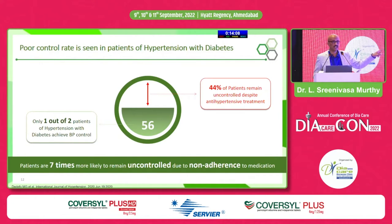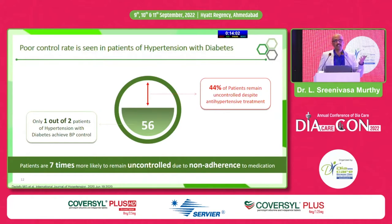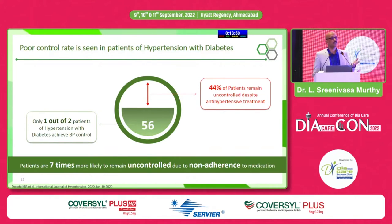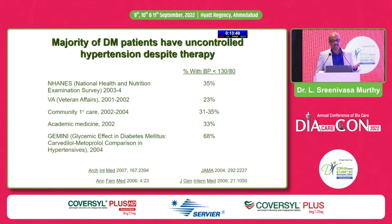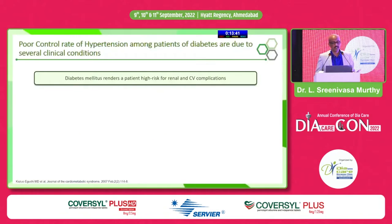The key point is non-adherence and non-compatibility with treatment. After three drugs, adherence drops down to 70% — meaning 30% of the time patients don't take the medications whatever you give. We should consider compliance and adherence as a key factor, along with which antihypertensive to use. The majority of diabetic patients have uncontrolled hypertension despite therapy, and this is consistent across both Indian and western data.